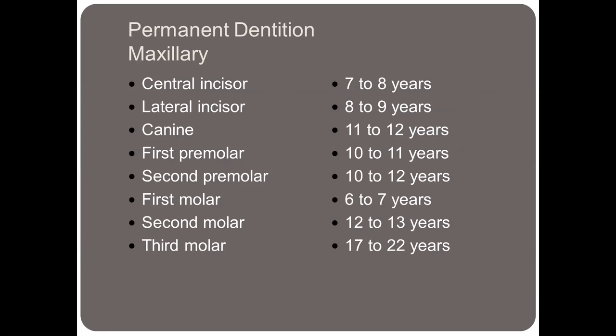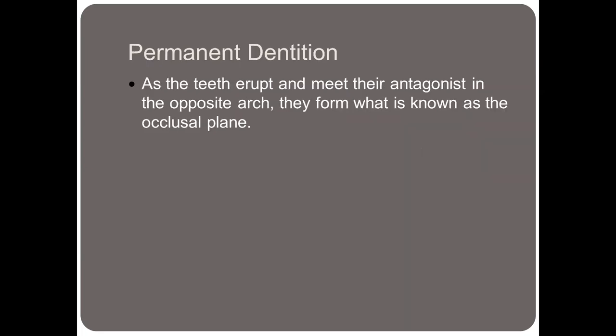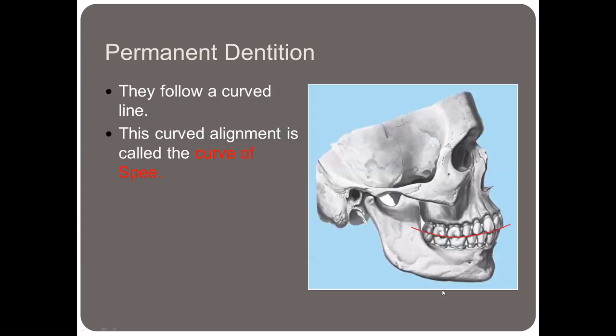These are the guidelines of the permanent dentition on the maxillary arch; the next slide shows the permanent dentition of the mandibular arch. As the teeth erupt and meet their antagonist — the tooth on the opposite arch — they form what's known as the occlusal plane. One term to know is the curve of Spee, which is the lateral view from anterior to posterior, and that curve alignment is called the curve of Spee.